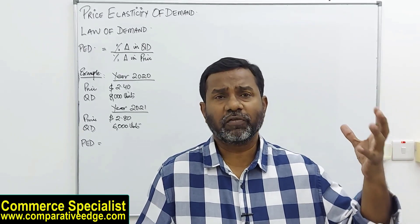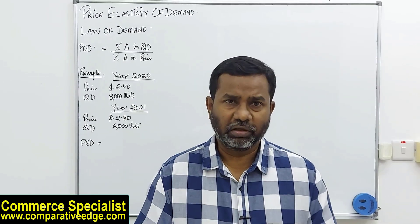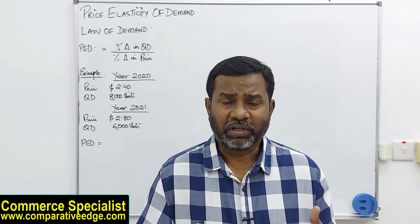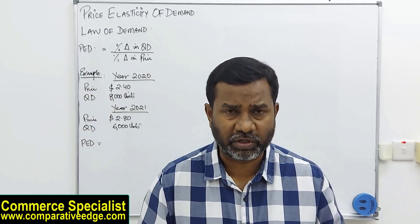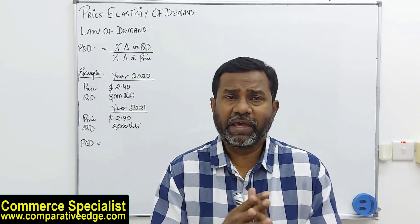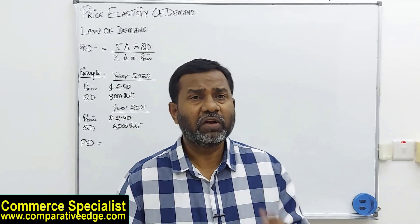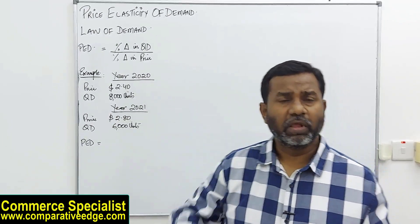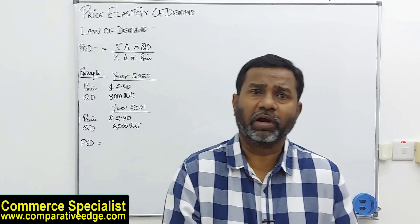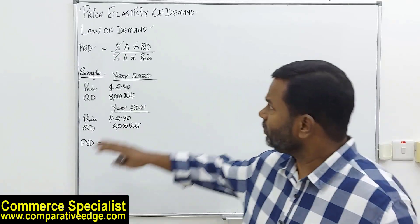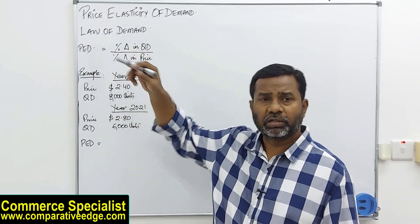Today's lecture is about how the principles of economics integrate with management accounting in decision-making. For example, in a company deciding whether to change the price of a product — if we increase the price by 10%, or reduce it by 10%, what will happen? There should be no guesswork, because the consequences can be severe. So we look at price elasticity of demand. Price elasticity of demand measures the extent of change in demand for a product in response to a change in its price. The formula is: percentage change (Δ) in quantity demanded divided by percentage change in price.